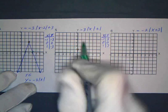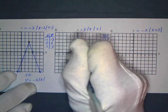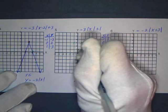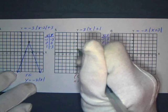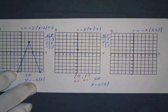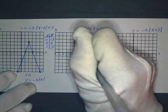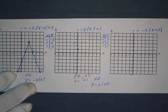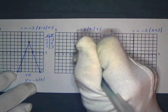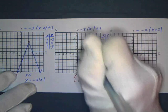So this would be one to the left up three, one to the right up three. Oops, excuse me. Up three, one to the left up one, two, three, one to the right up one, two, three.